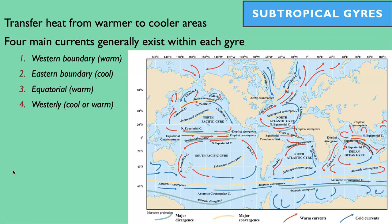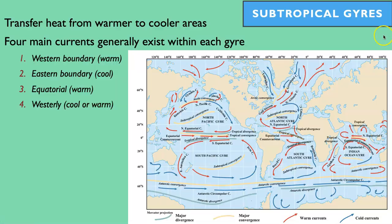An example exam question might be: name a warm water current in the South Pacific. You could say the East Australian Current, which was featured in Finding Nemo, or the Peru Current. The arrows on the map show the directions of the water, and the color indicates the temperature. Notice that in California, cold water comes from the north, whereas in Florida, warm water comes from the Gulf — that's why surfers in California wear a wetsuit, and surfers in Florida don't have to.